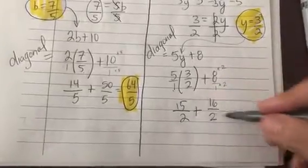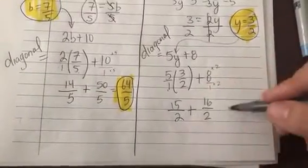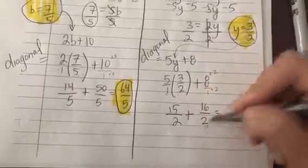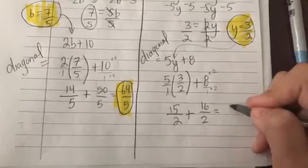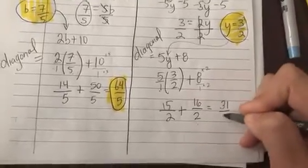Now though, I can add these two fractions because I have common denominators. So that would be 15 plus 16 makes 31 halves.